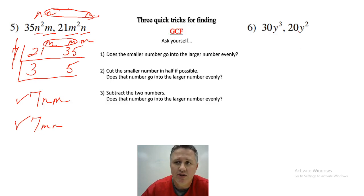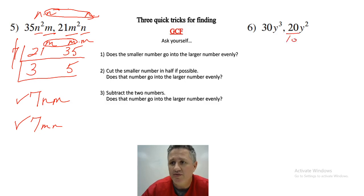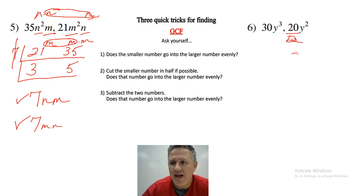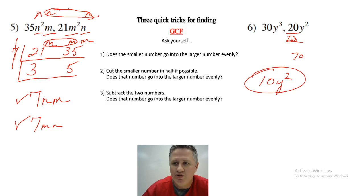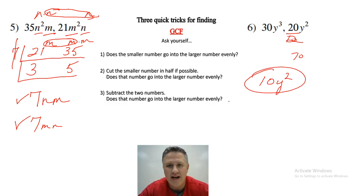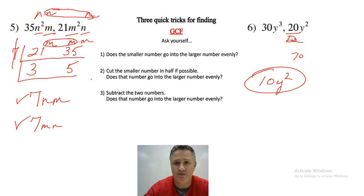Next one: does the smaller number go into the larger? Does 20 go into 30? No. So cut it in half — 20 divided by 2 is 10. Does 10 go into 30? Yes. So the numerical value of the GCF is 10. Now how many Ys do I have in common? This one has two, this one has three — so they share two in common. That's how you do GCF with variables using these tricks to save yourself time.